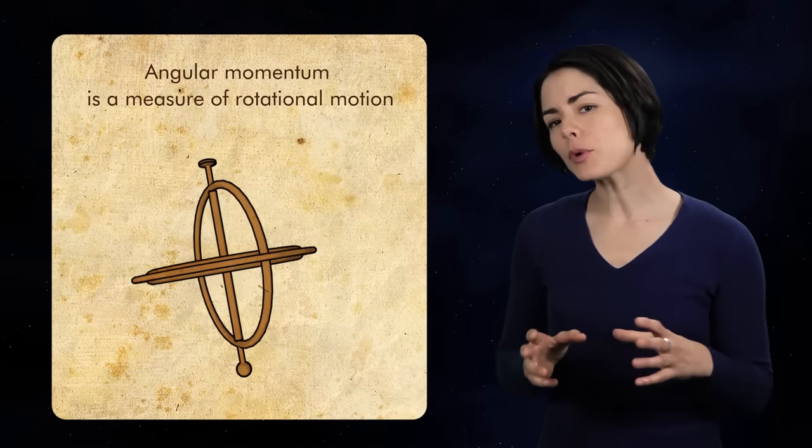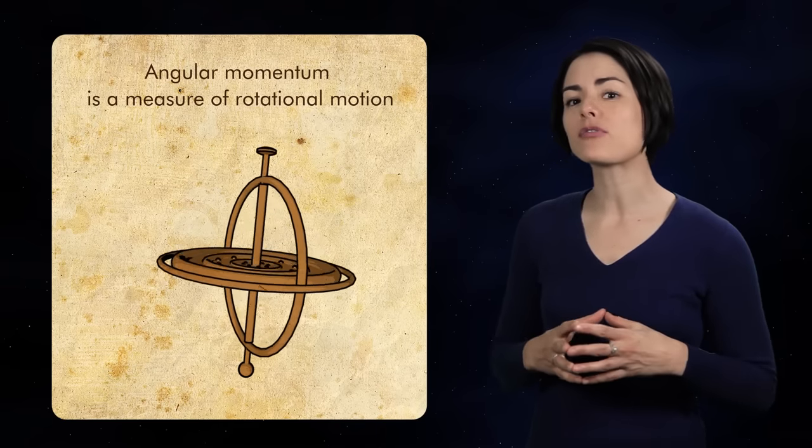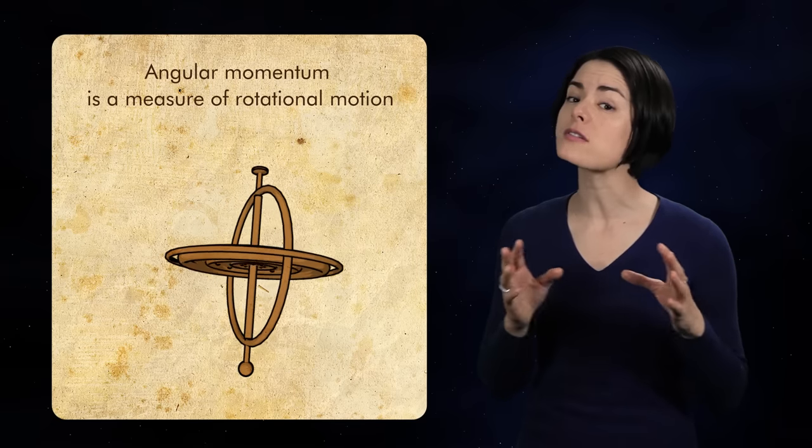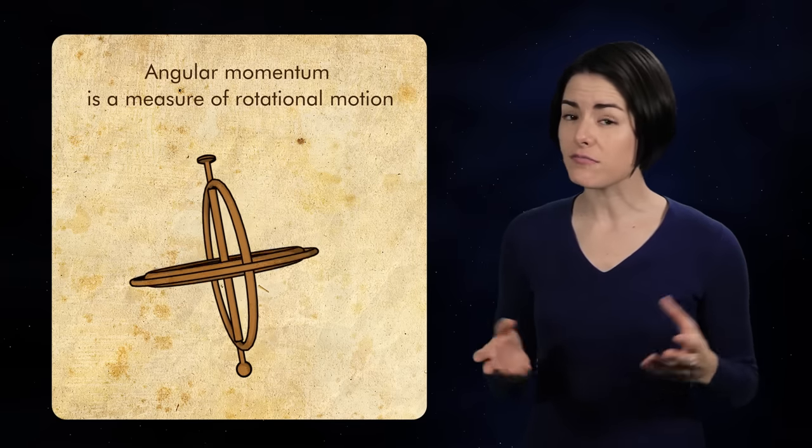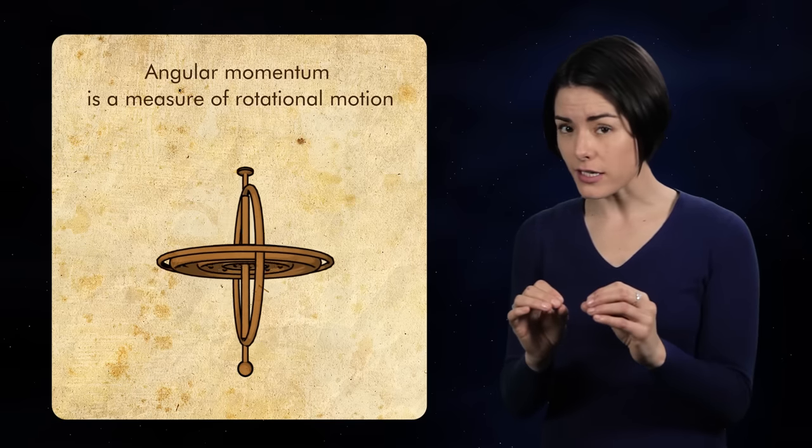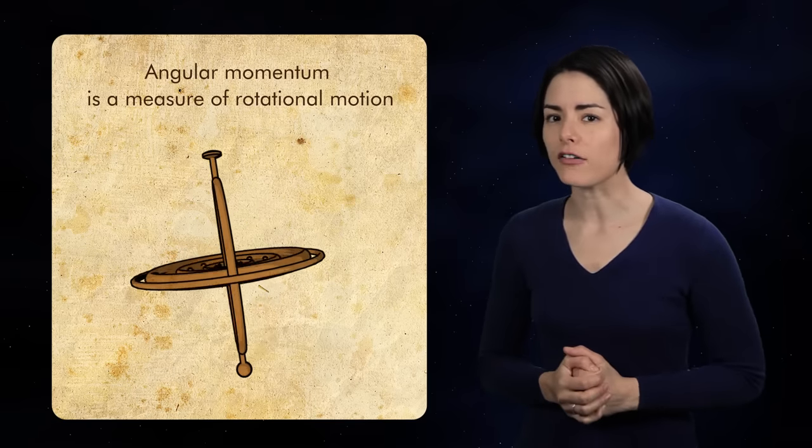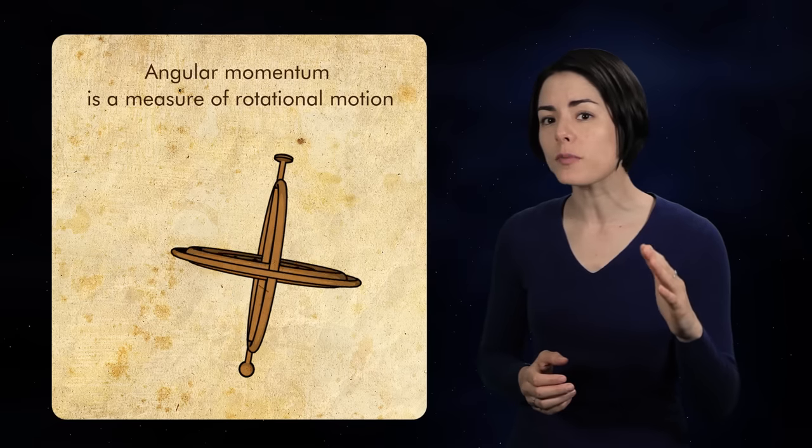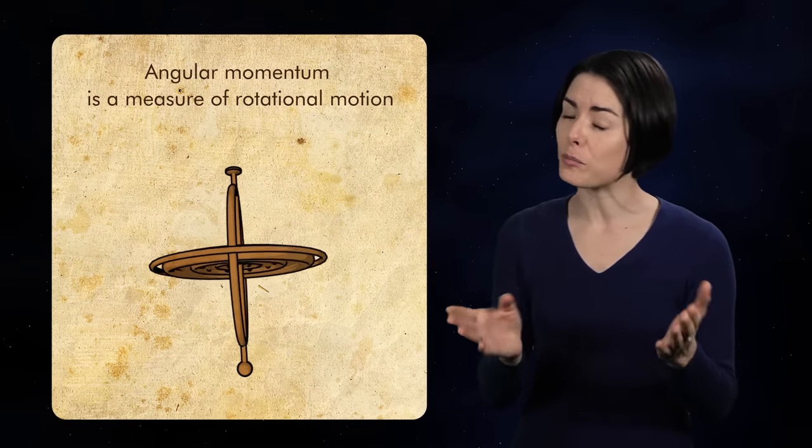The second law, it turns out, is also a consequence of the conservation of angular momentum, which was not a concept known to Kepler in the 17th century. Angular momentum is a measure of the amount of rotational motion in a body or system of bodies, like Mars and the Sun, and in the absence of outside forces, it's a fixed quantity. This implies a trade-off between the distance at which Mars orbits and its velocity, like Kepler noticed.